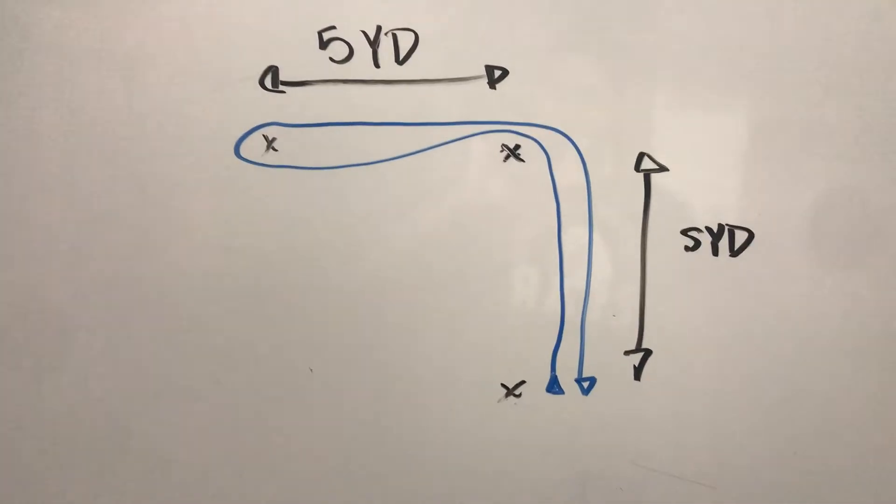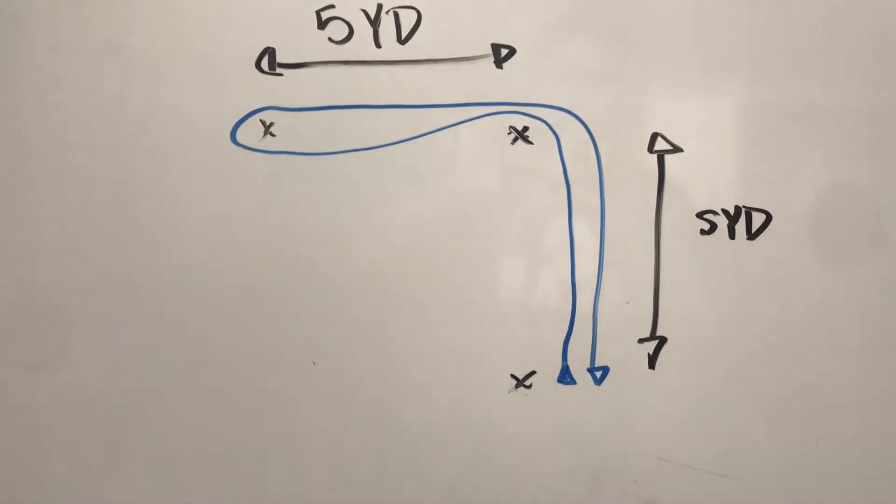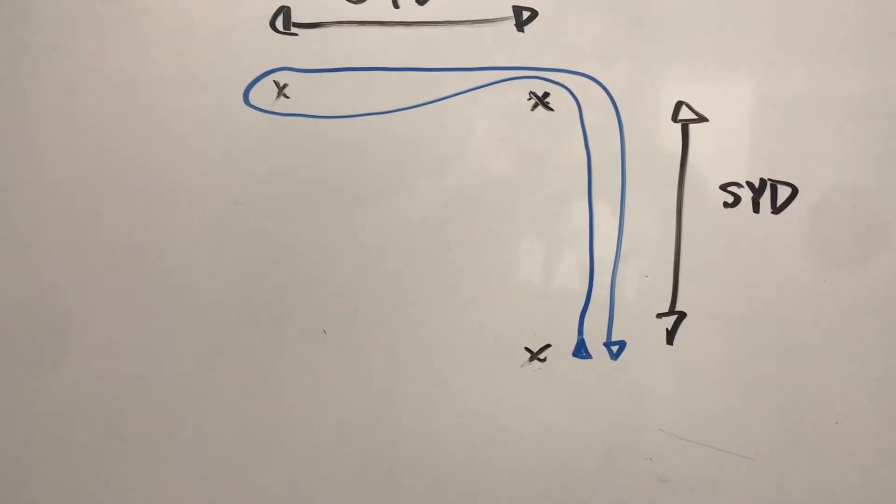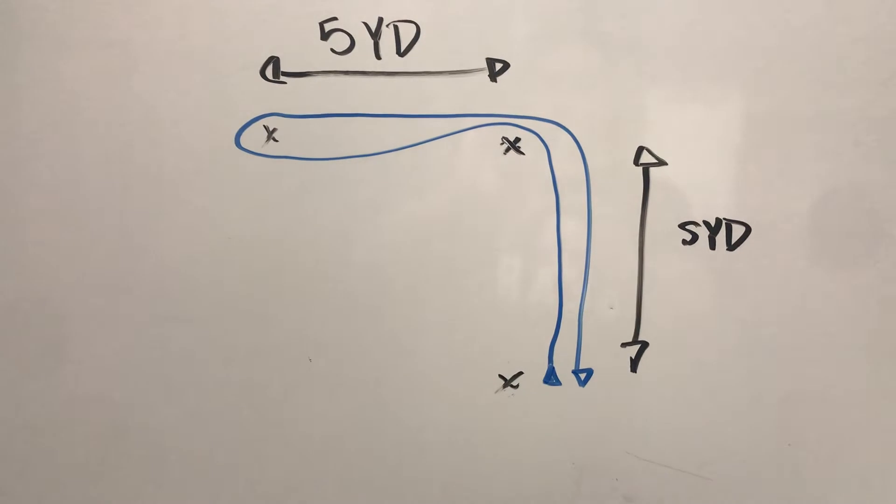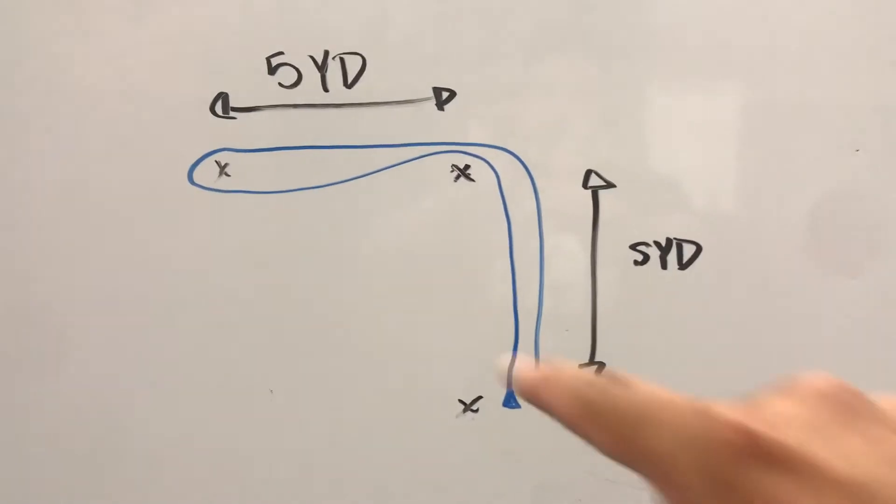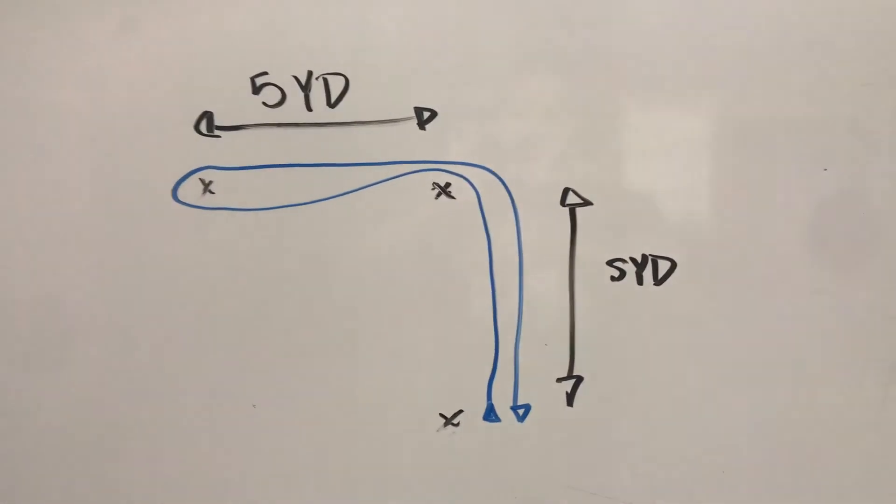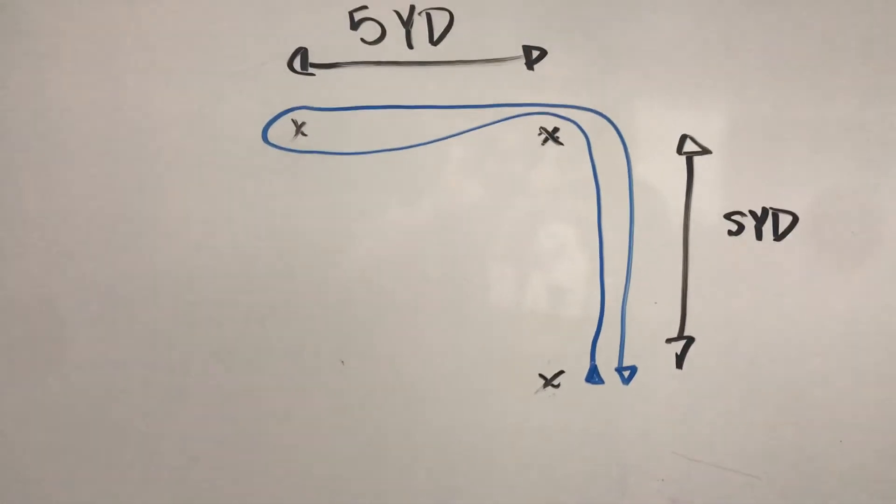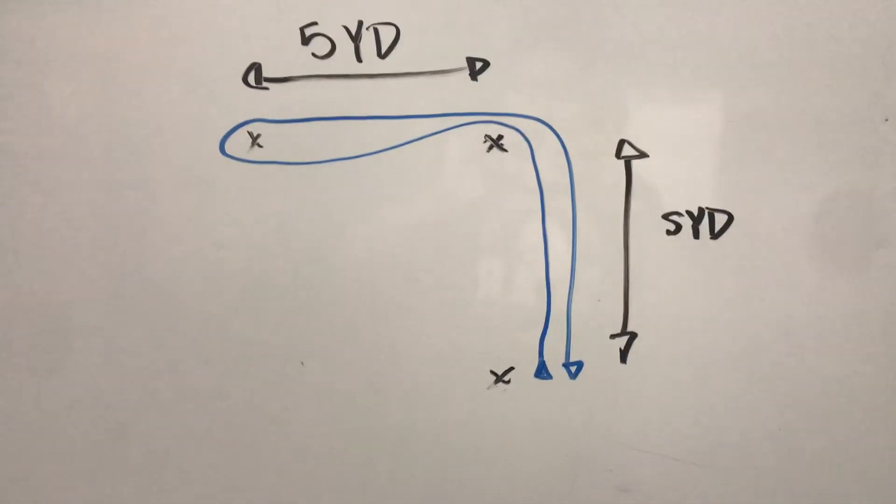So guys, try that one out. It's very easy to set up. All you need is three cones. You can mix it up, you can start going to your left, or you can grab that third cone, put it on the other side, and go to your right. Mix it up, have fun with it, let's get it.